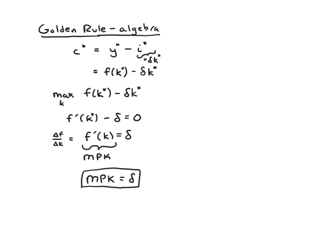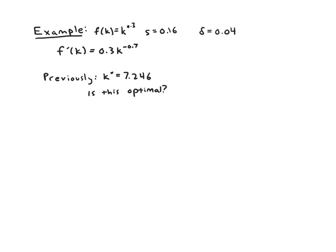So let's do an example where we work with this equation. We'll build on the equation we've been working with in all the previous discussions. We'll have f of k is k to the 0.3. We had a savings rate of 16%, a depreciation rate of 4%. And then I've given for you the derivative of f of k. It's f prime. The mpk is 0.3 times k to the negative 0.7. In a previous review, we found that the steady state for this savings rate and depreciation rate is k star is 7.246.